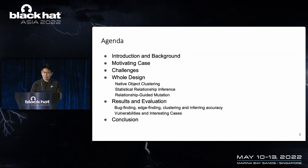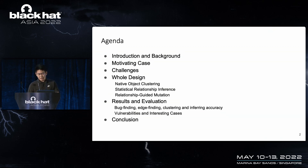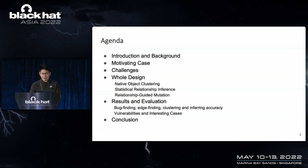This is our agenda for today. We will start by understanding what binding code is and its features. Then I will go through a motivating case — a heap overflow vulnerability in Adobe Acrobat. Through this case, I want to demonstrate that cooperative mutation is essential in finding bugs in binding code. After that, we will discuss the challenges of achieving cooperative mutation. Then I will present the whole design of our solution called Cooper, which contains three components: native object clustering, statistical relationship inference, and relationship-guided mutation. Finally, I will present bug findings, evaluation, case studies, and a conclusion.